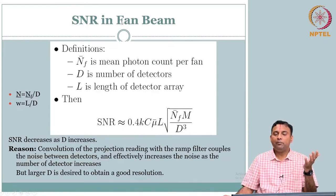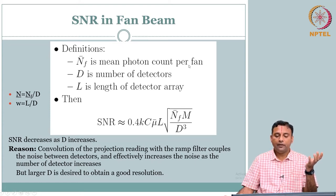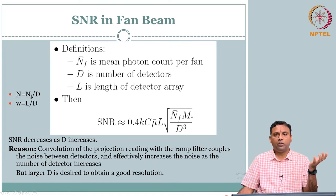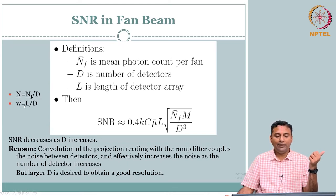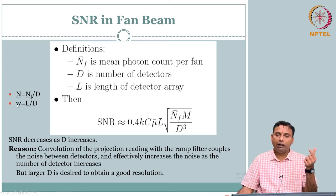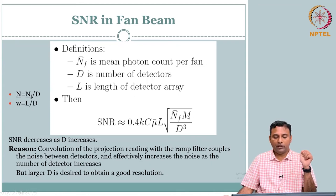For fan beam, n_f is the number of photons per fan, d is the number of detectors, and l is the length of the detector array. There is a slight change in the formulation. Your SNR is 0.4 times k times C times mu times l times square root of n_f times m divided by d-cubed. Here n-bar is n_f over d, and w is l over d — the length of the detector array divided by number of detectors, giving you the width per detector.